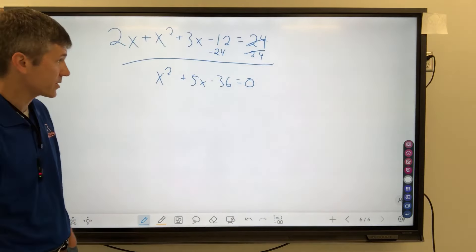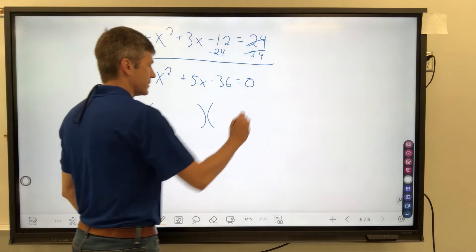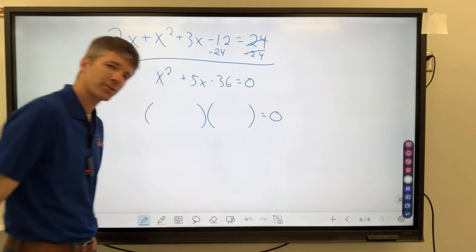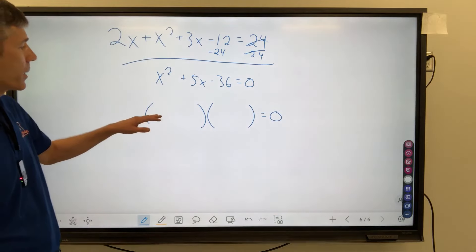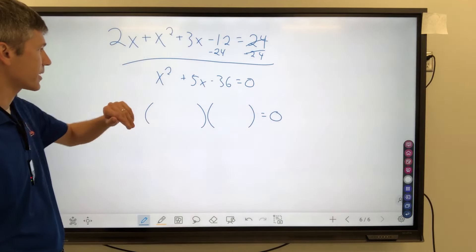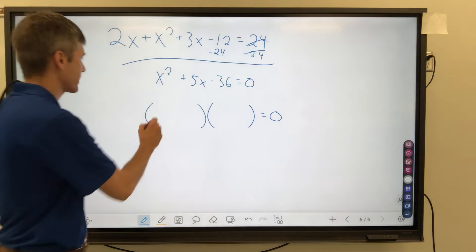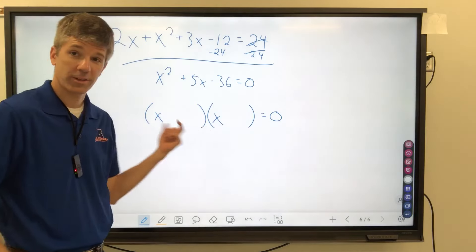Okay, let's factor. This should look a little familiar. Okay, I need two numbers that multiply to give, well, let's not get too far ahead. x squared is x times x.